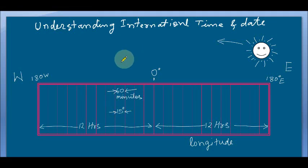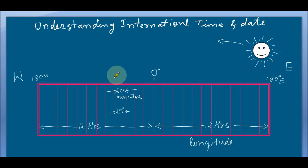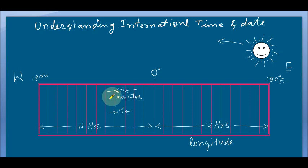First of all, I would like to say what you will learn in this video. After watching this video, you will be very clear about how world time changes, where AM and PM time ends, and what happens when the 180-degree longitude is crossed from west to east or east to west — whether to increase or decrease a day. I will also deal with a few geography sums about how to calculate the time of place A and place B.